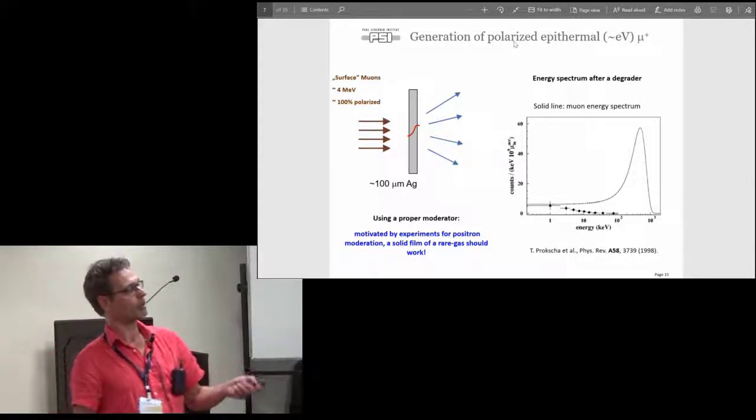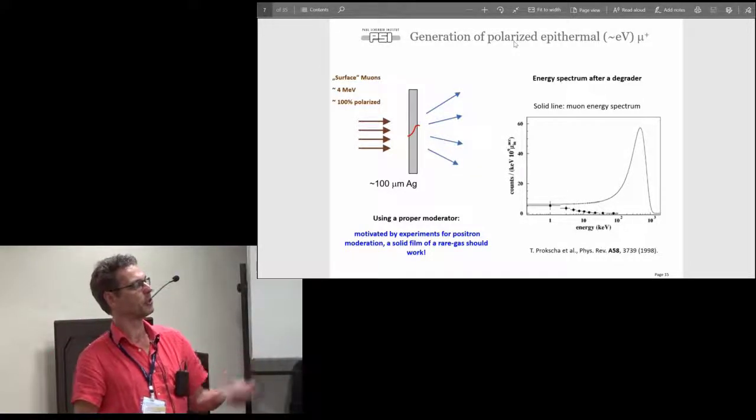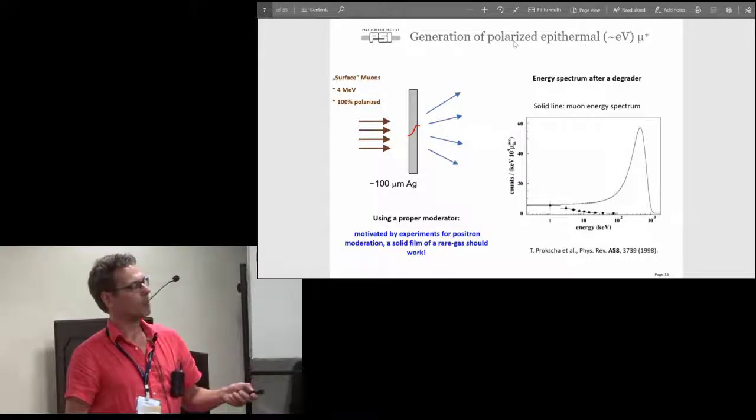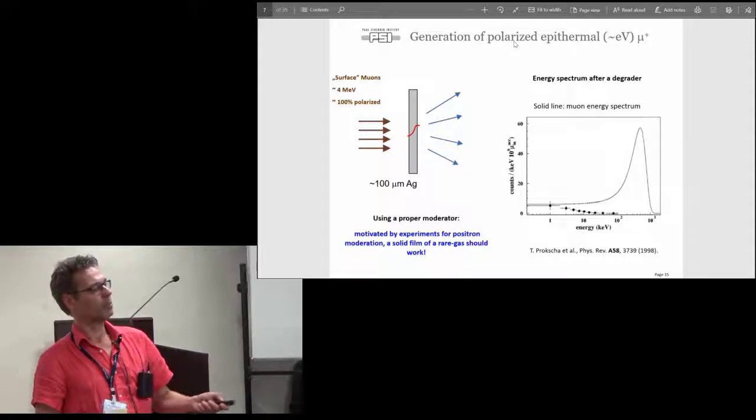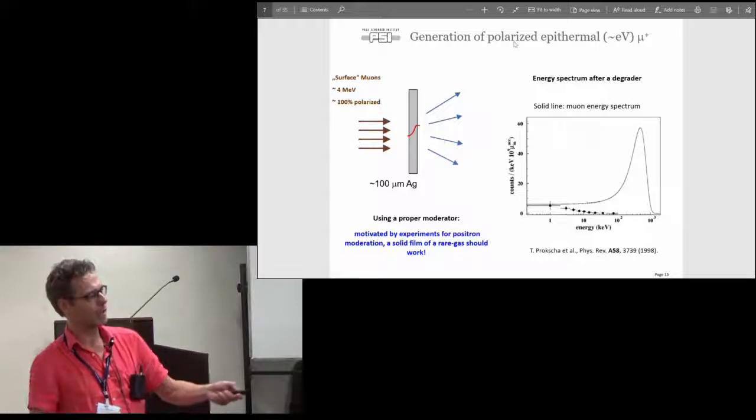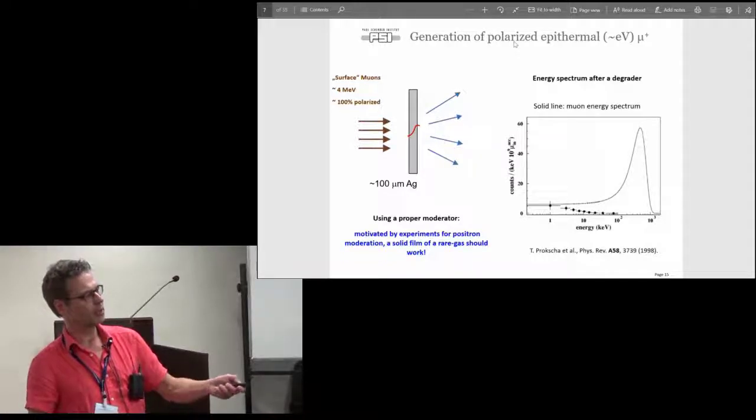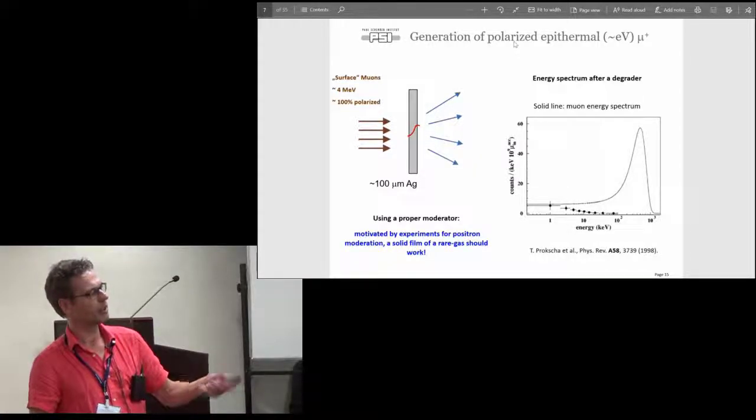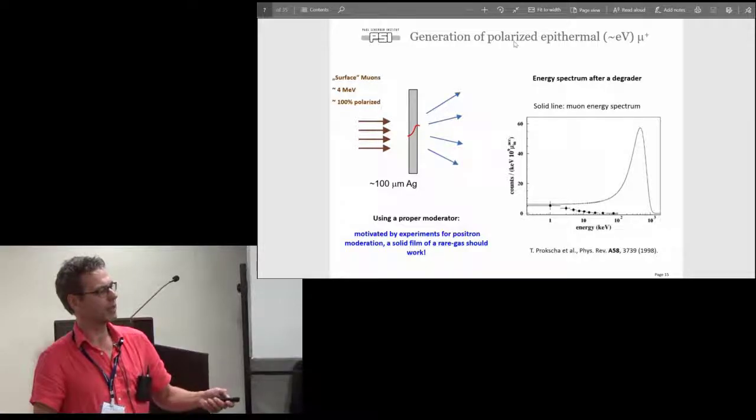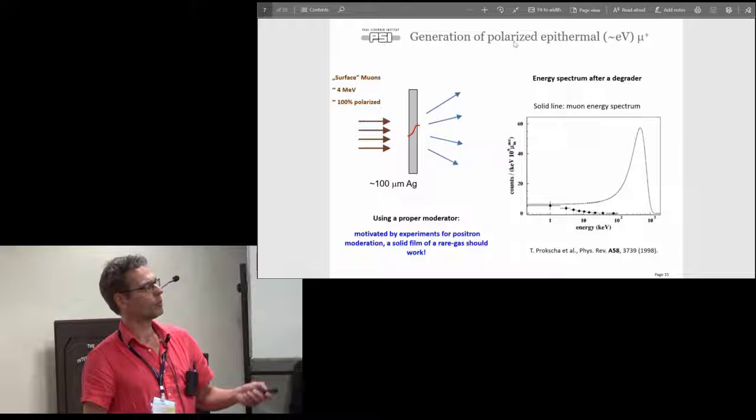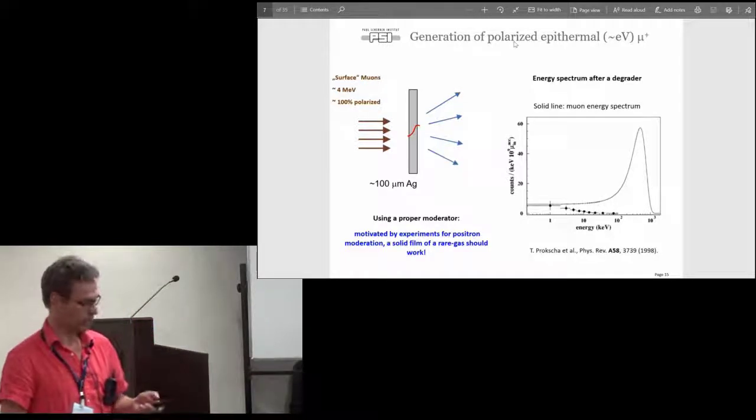You might think, what is the problem? You just put some material into the beam to degrade it and slow it down. But what you typically get is a very broad distribution with a peak at a few hundred keV. You can make it thicker and the peak shifts to lower energies, but it's getting broader and broader. These black dots, this is muonium coming out, a neutral atom where the positive muon captures an electron from a hydrogen-like muonium state. It's in this kiloelectron volt range where you get more and more muonium, so this is completely useless to make a low energy muon beam.